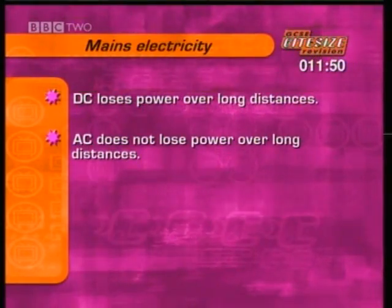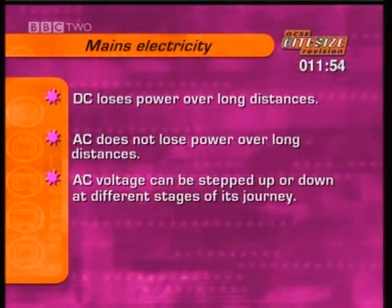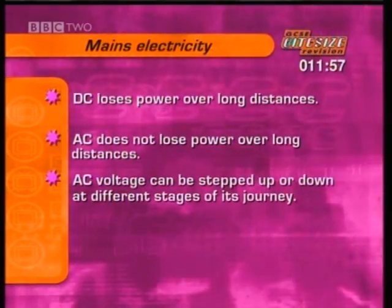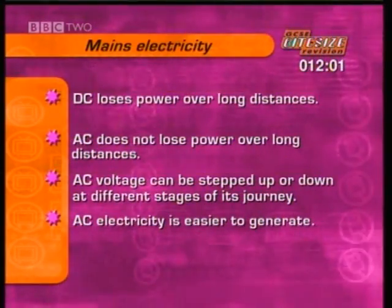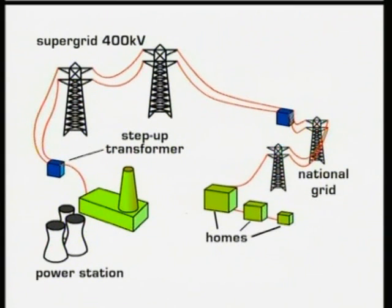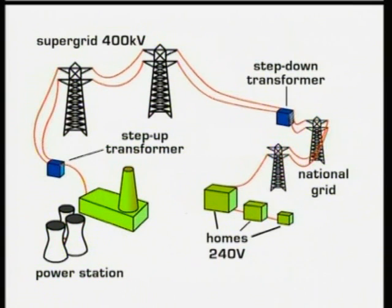AC does not lose power over long distances. Another advantage of AC is that it can be transformed up to higher voltages or down to lower voltages for different stages of its journey. AC electricity is also easier to generate. From the power station, the grid uses high voltages of up to 400kV to send electricity over great distances along thick cables that don't introduce much loss of energy. The supply can then be reduced to a safer 240V for use in the home.